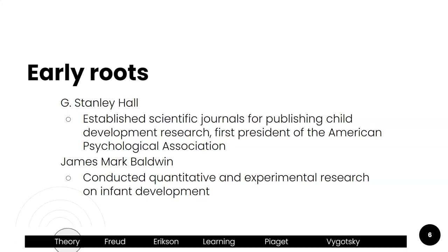You want to make sure you know G. Stanley Hall, who is considered the father of developmental psychology or child development. His interest was whether children develop in a certain way. He established a scientific journal and published child development research. He is also credited with being the first president of APA — the American Psychological Association — a huge association for psychologists to share research. You also have James Mark Baldwin, who conducted quantitative and experimental research on infant development, which was really important in increasing our interest in infants and developmental milestones.